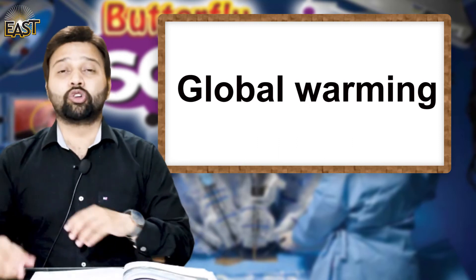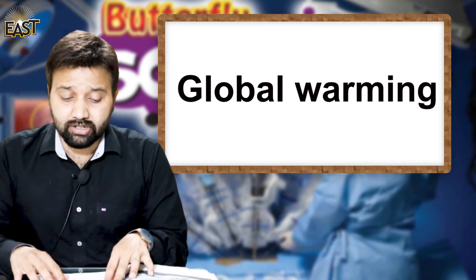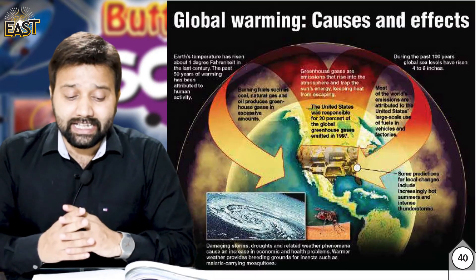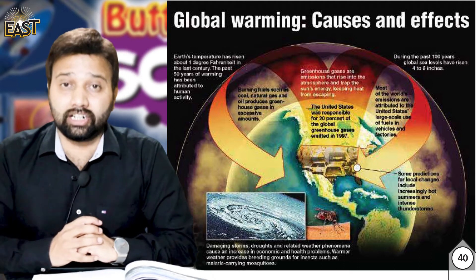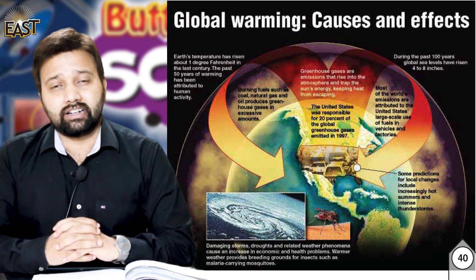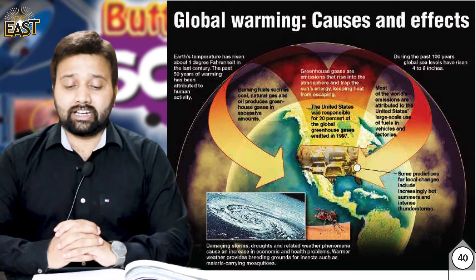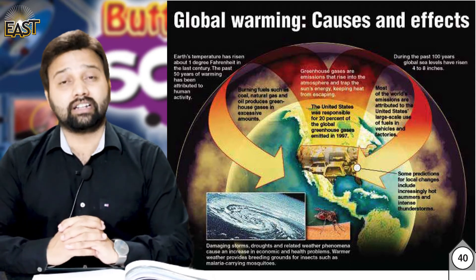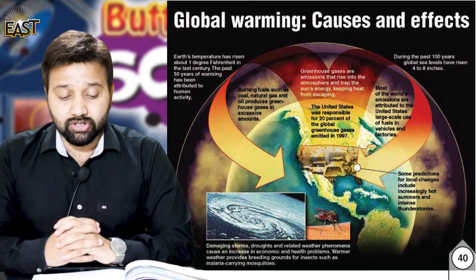Now I will explain all the terms one by one. Our first terminology is global warming. You can also see pictures of the new terminologies on the screen. Global warming is the process that causes the earth's temperature to rise and makes the earth warmer. Humans play a large role in the increase in the earth's temperature.